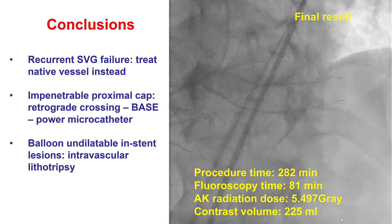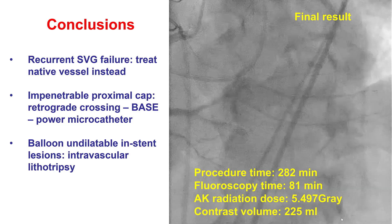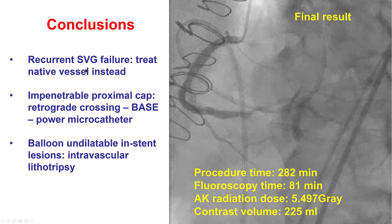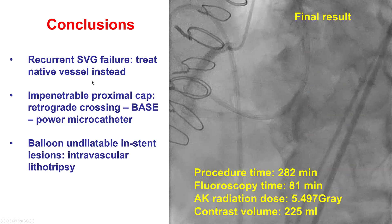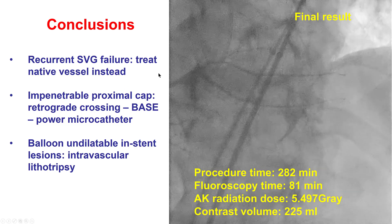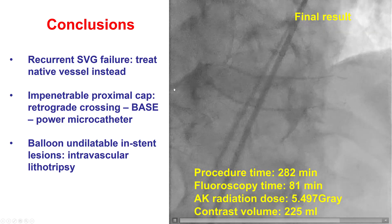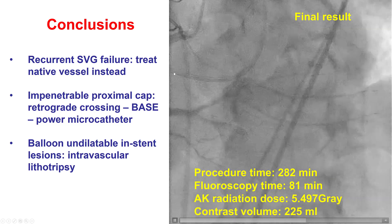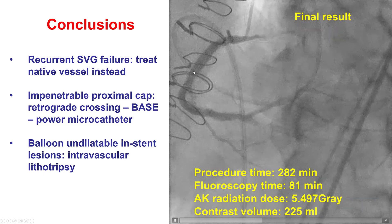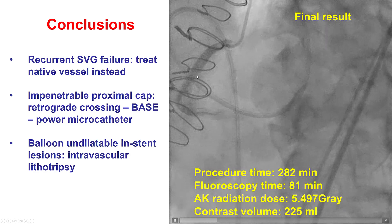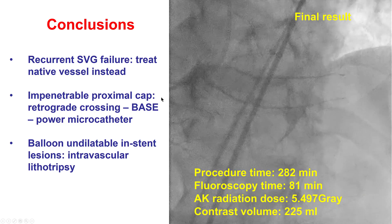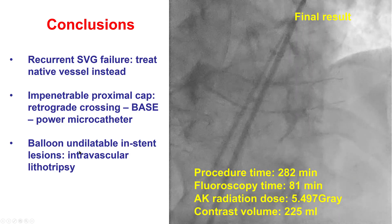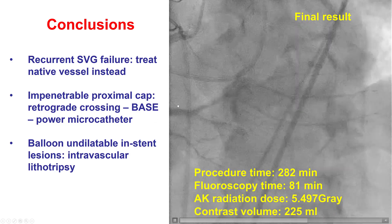In summary, there were several lessons from this case. First, when a saphenous vein graft fails repeatedly, chances are it will not remain patent for long, and if possible, treating the native coronary artery is the preferred revascularization strategy. We had a highly calcific, impenetrable proximal cap and could not advance any antegrade guide wire. We eventually got a retrograde wire in the extraplural space, and then used the BASE technique — balloon-assisted subintimal entry — to create a dissection proximal to the occlusion and advance a guide wire into the extraplural space. Despite that, there was still difficulty fully expanding the coronary artery, and this is where intravascular lithotripsy was useful in allowing full expansion of that part of the vessel. Thank you.